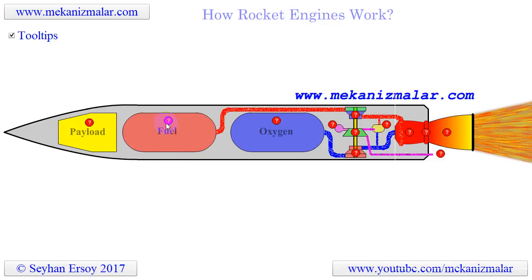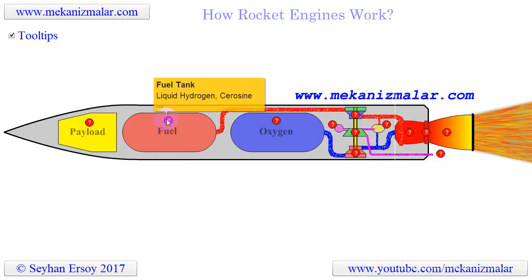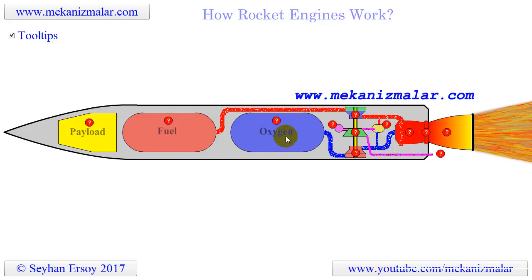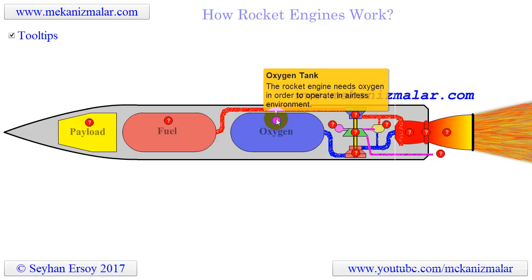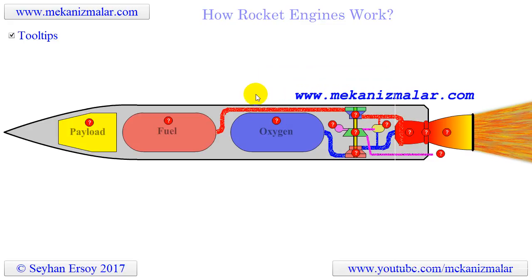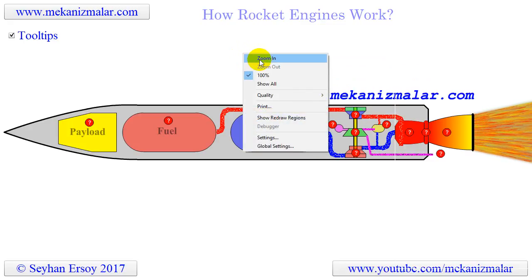The second part is the fuel tank, which is a huge tank filled with liquid hydrogen or any other type of fuel. The third part is a large oxygen tank, which allows the rocket engine to operate in an airless environment such as space.